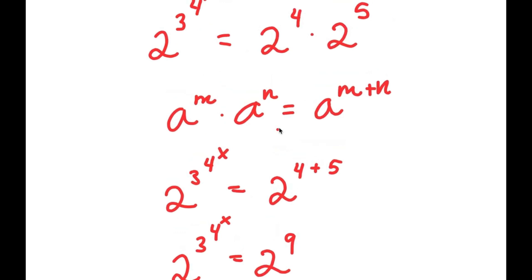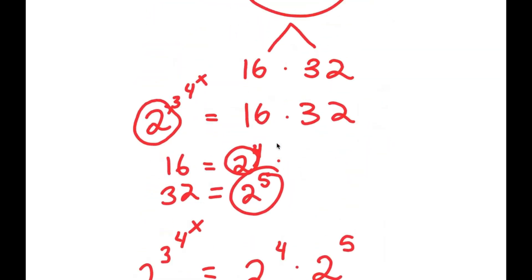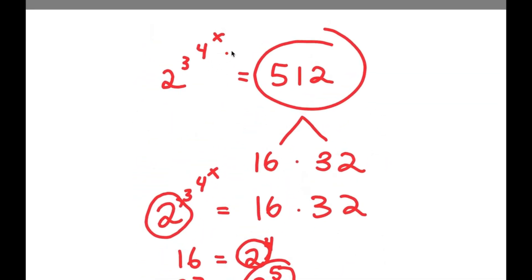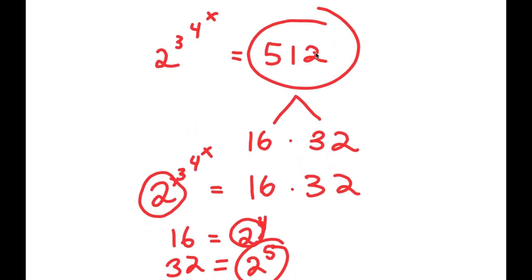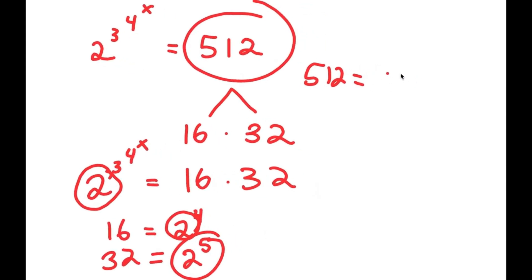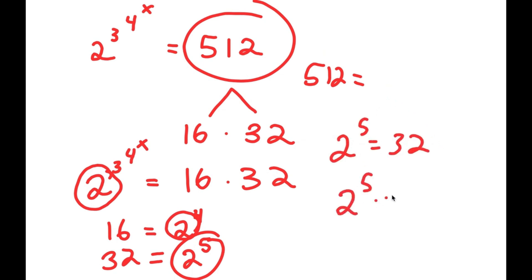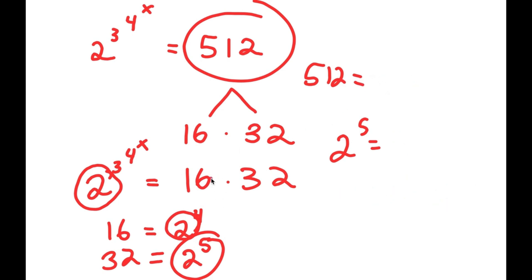Also, instead of doing all that, remember at the start we had 2 to the power of 3 to the power of 4 to the power of x equals 512. We know that 2 to the power of 5 is 32, so 512 is 2 to the power of 5 times 2 to the power of 4, which is 2 to the power of 9. So we could have just said at the start that 512 is equal to 2 to the power of 9, but some people don't know that, so that's why we do all of that.